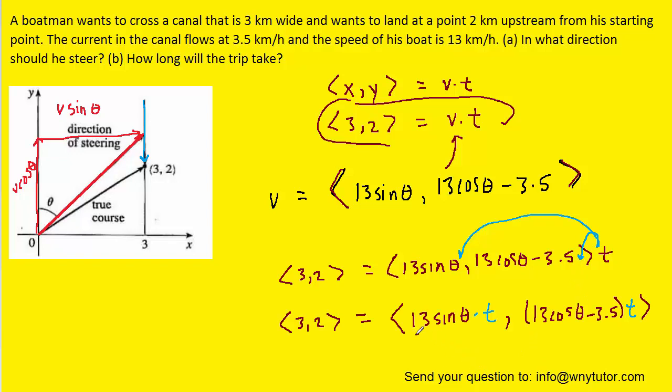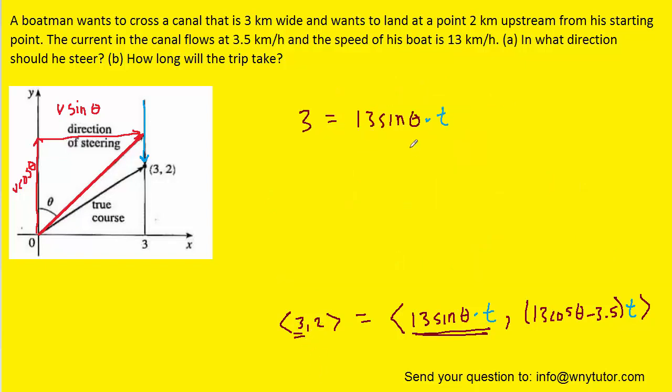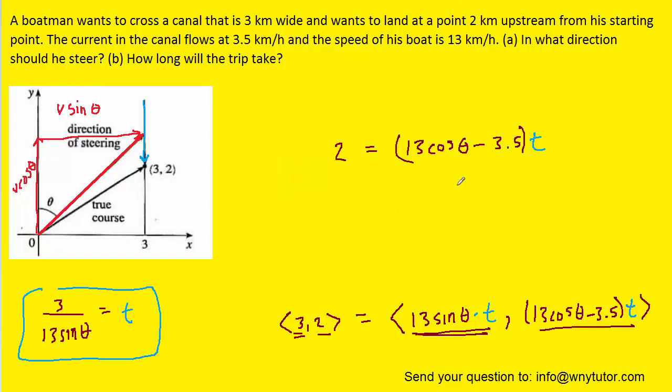And so now we can set the x component of the position equal to 3. And what we'll do is solve this equation for time by dividing both sides by 13 sin theta. So now we have an expression for the time, and we're going to hold on to this expression. Next what we'll do is set the y components of the position equal to each other. Remember, we had just solved for the time t in terms of theta, so we're going to make a substitution here where we replace the time t with 3 over 13 sin theta.